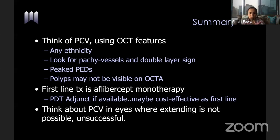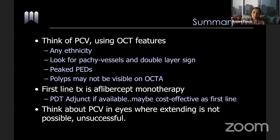Summary for this case: think about polypoidal in any ethnicity — African American, Caucasian, Hispanic, and Southeast Asian. It's very prevalent and not restricted to any ethnicity. Look for large dilated choroidal vessels bumping against Bruch's membrane associated with a shallow double-layer flat PED. Peaked PEDs tell you where the polyps are even without ICG. Polyps may be hard to see on OCT angiography. Start with ILEA monotherapy and then PDT is an adjunct if it fails, though in other countries they start with PDT as it's more cost-effective — giving one treatment that removes the need for many injections.